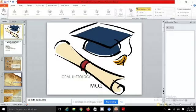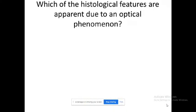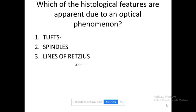Hello students, we are going to discuss an important MCQ from oral histology. The question is: which of the following histological features are apparent due to an optical phenomenon? Our options are enamel tufts, enamel spindles, incremental lines of Retzius, Hunter-Schreger bands, and enamel lamellae.